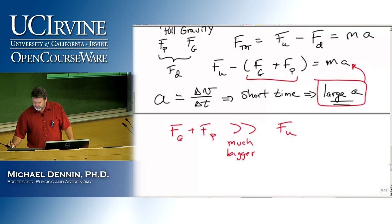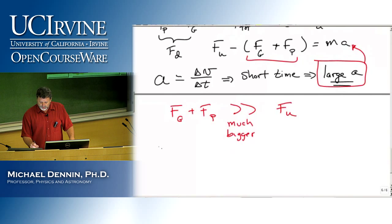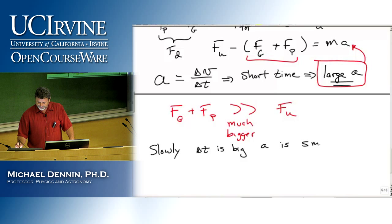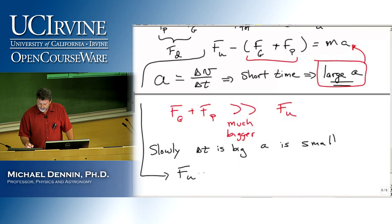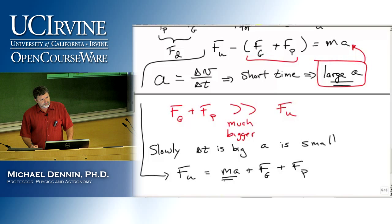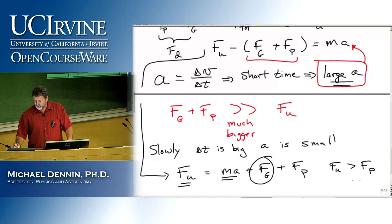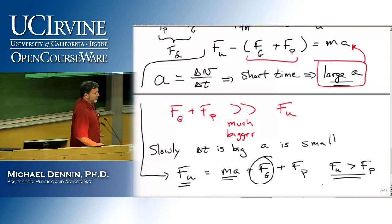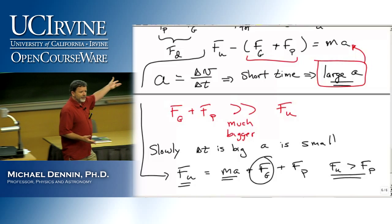On the other side, if I do it slowly, delta-t is big and acceleration is small. Now my up force equals MA plus gravity plus what I'm pulling with. If the acceleration is pretty small, this term matters less, and the up force is bigger than the pulling force. So now the top string experiences the bigger force and breaks first.